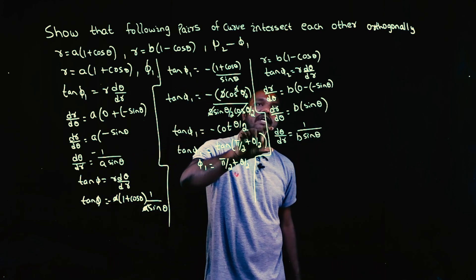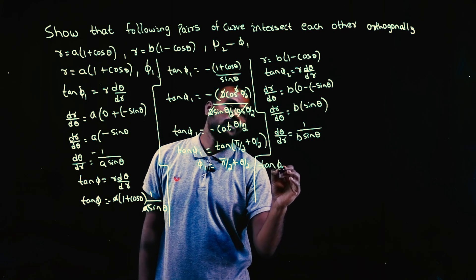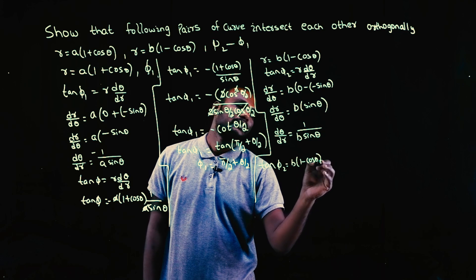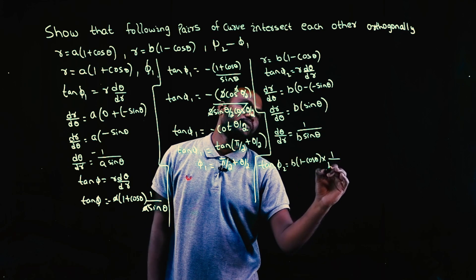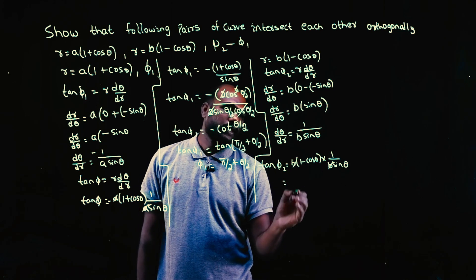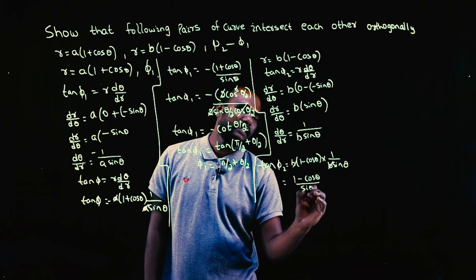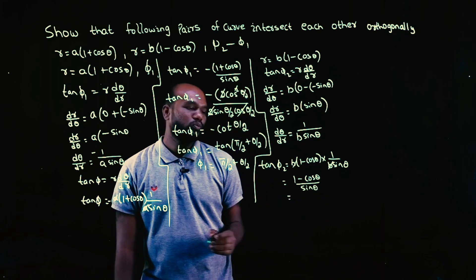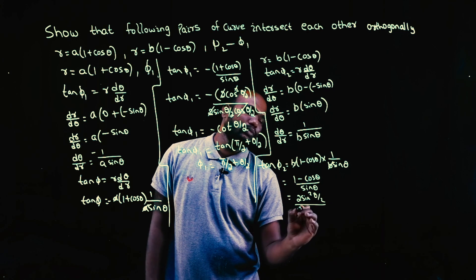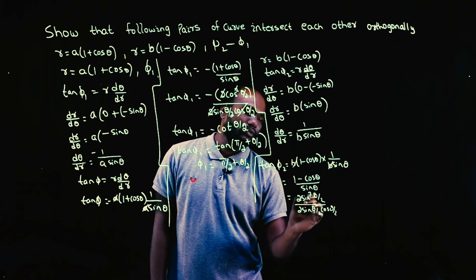Substituting into tan φ₂ = r · (dθ/dr): r = b(1 - cosθ) and dθ/dr = 1/(b·sinθ). So tan φ₂ = b(1 - cosθ) · 1/(b·sinθ). The 'b' cancels, leaving (1 - cosθ)/sinθ. Using identities: 1 - cosθ = 2sin²(θ/2) and sinθ = 2sin(θ/2)cos(θ/2).